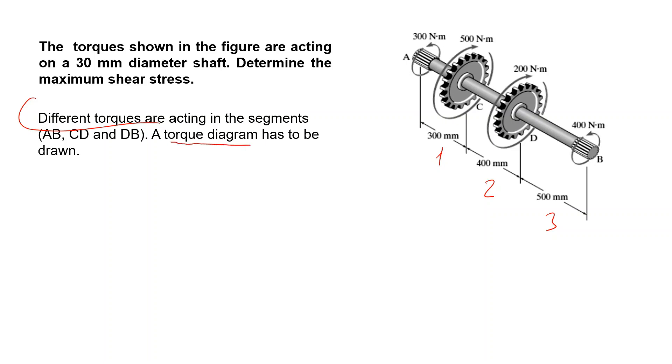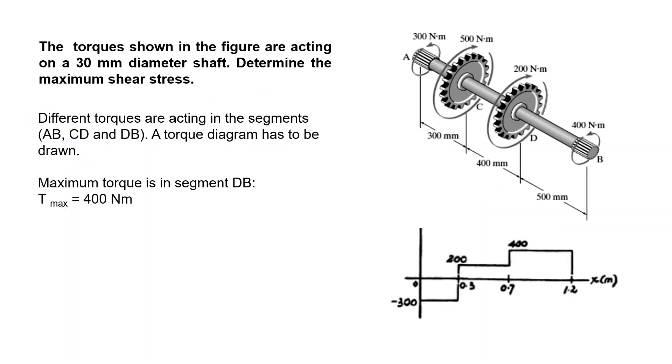We know that different torques are acting in different segments, segment 1 and 3, so we have to find the segment where the torque is maximum. So we need a torque diagram. For this we know that we have to cut in these regions. When you cut here you obtain minus 300, when you cut here plus 200, when you cut in region 3 the torque is 400. So the maximum torque in the segment DB has to be used to calculate the stresses.